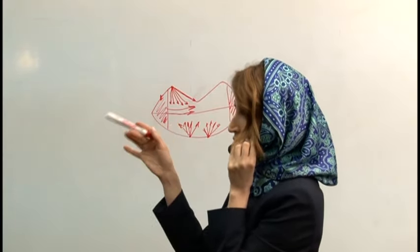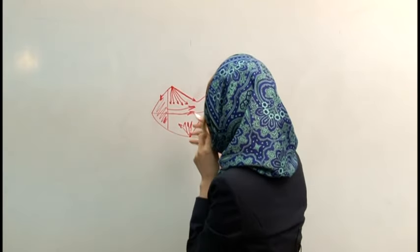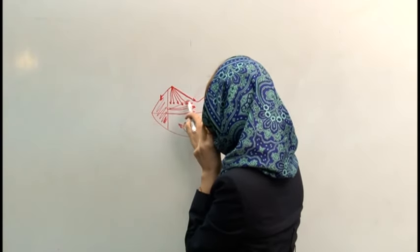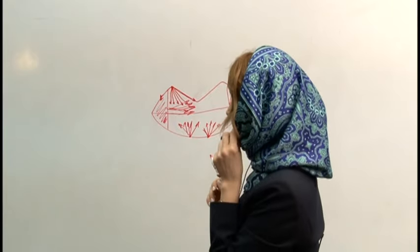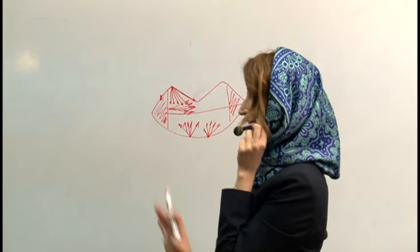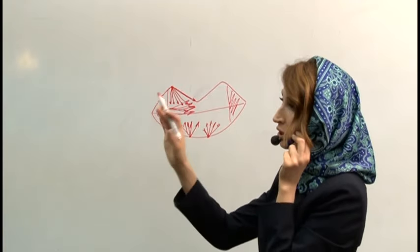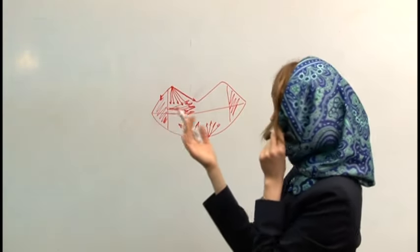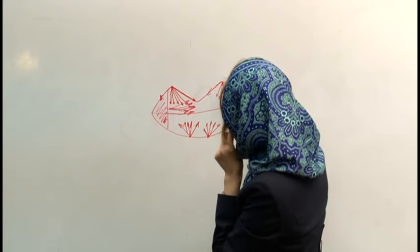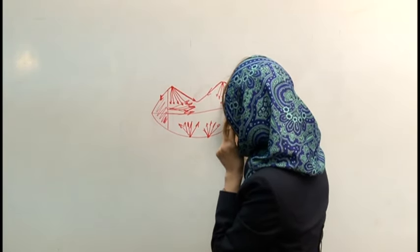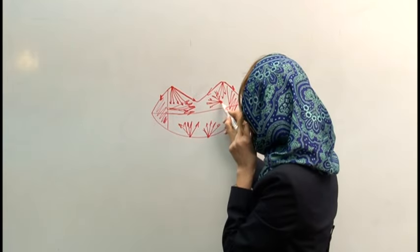For thin lower lip with downturned corners, we do vectors like this technique — not only one vector here but a fan as well. For a more defined shape, do more vectors; for a natural result, do only three or four. If the patient has an irregular lower lip shape, we place the point here with vectors, and the next point here. If you want more shape, you do many vectors; for a natural look, only three or four.